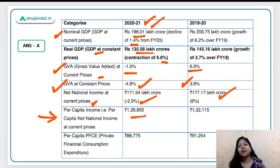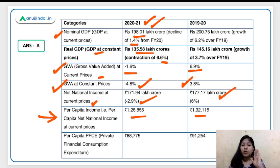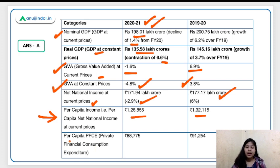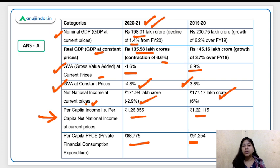Per capita income is an important figure: in FY21 it was rupees 1,26,855, and in FY20 it was rupees 1,32,115. In FY21 there was a clear decline across almost all components. Per capita private final consumption expenditure stands at rupees 87,750 in FY21, compared to rupees 91,254 in FY20.